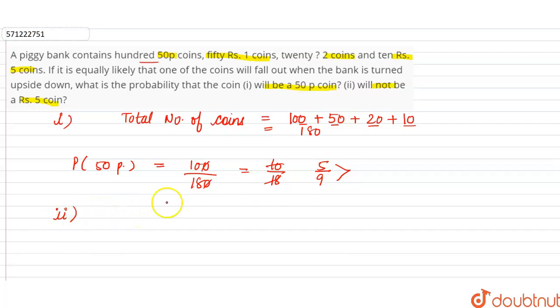Now in the second part, it is asked to find the probability that the coin will not be a five-rupee coin. So firstly, we have to add fifty-paise coins, one-rupee coins, and two-rupee coins. Fifty-paise coins are 100...